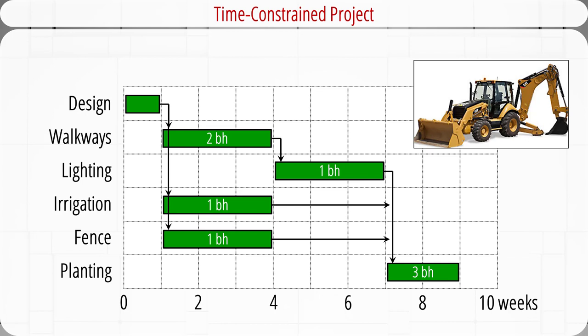This figure is the project Gantt chart. The dependencies are shown with the vertical connecting arrows, and the horizontal arrows represent the activity slack.